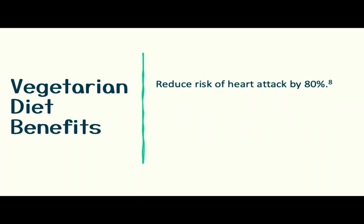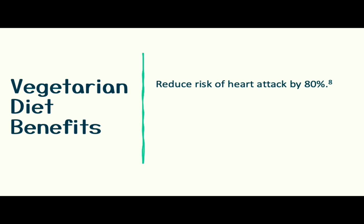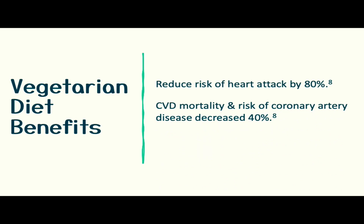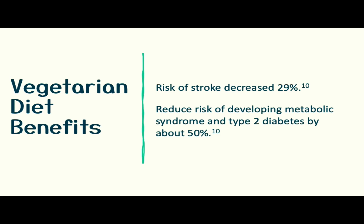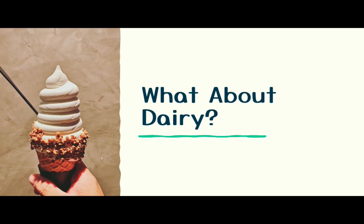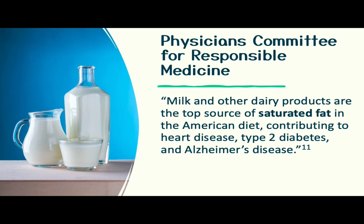Some studies show a vegetarian diet can reduce the risk of heart attack by 80%. Total mortality and risk of cardiovascular disease decreases 40%, and cancer incidence is lowered 8%. Risk of stroke decreases 29%, and the risk of developing metabolic syndrome and type 2 diabetes is cut by about 50%. Regarding dairy, the Physicians Committee for Responsible Medicine states that milk and dairy products are the top source of saturated fat in the American diet, contributing to heart disease, type 2 diabetes, and Alzheimer's disease.